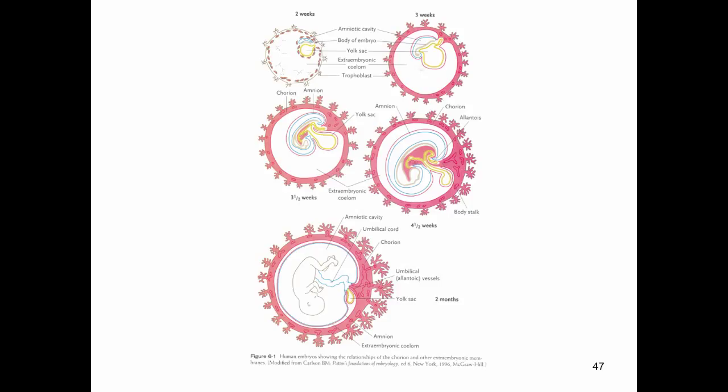The placenta is an incredibly important component of fetal existence and fetal survival. The formation of the placenta involves two components: the placenta is made up of fetal tissue and maternal tissue. On the fetal side, the fetal tissue is the chorion, the chorionic plate or the chorion and the chorionic villi.